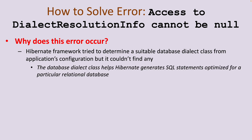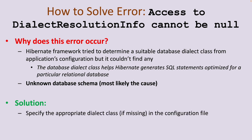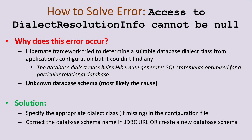The database dialect class helps Hibernate generate SQL statements that are optimized for a particular relational database. This error can be caused by an unknown database schema. The solutions to fix this error are: specify the appropriate dialect class name if missing in the configuration file, correct the database schema name in the JDBC URL, or create a new database schema.